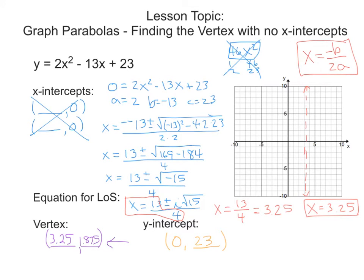Let's plot our vertex on the coordinate plane. x equals 3.25 puts us on the line of symmetry, and the y value is 1.875, so that's approximately here. Our y-intercept is at 23 — if we extend the y-axis, that's about here. We go ahead and graph our parabola coming from the vertex through that point, then make a congruent branch on the other side. When we don't have x-intercepts, we find the line of symmetry using the beginning of the quadratic formula — negative b over 2a — ignoring the rest.